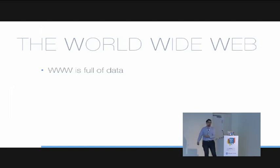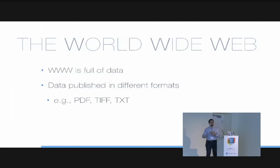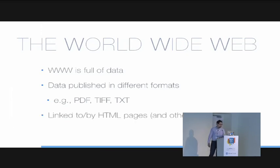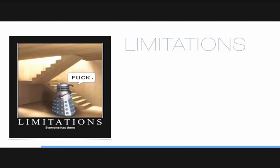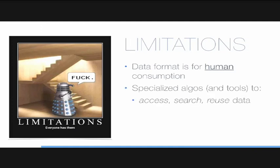From a knowledge management point of view, the WWW is full of data. The data are usually published in different formats — they may be available in PDF, TIFF as images, or text files. All these resources can be linked to or by HTML pages or other documents. But this kind of approach has some limitations. First of all, the data format is mainly for human consumption. The different formats require specialized algorithms and tools to access, search for, and reuse the data.